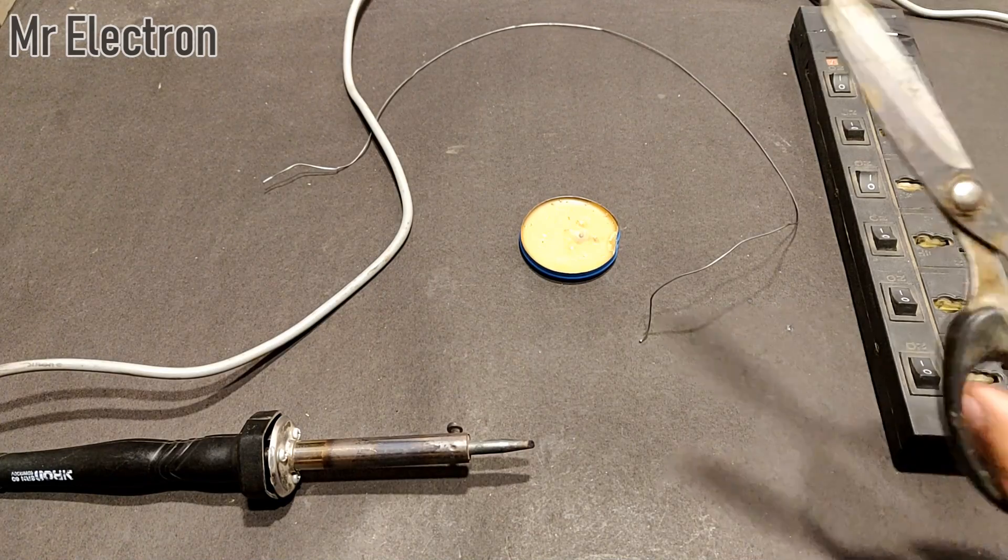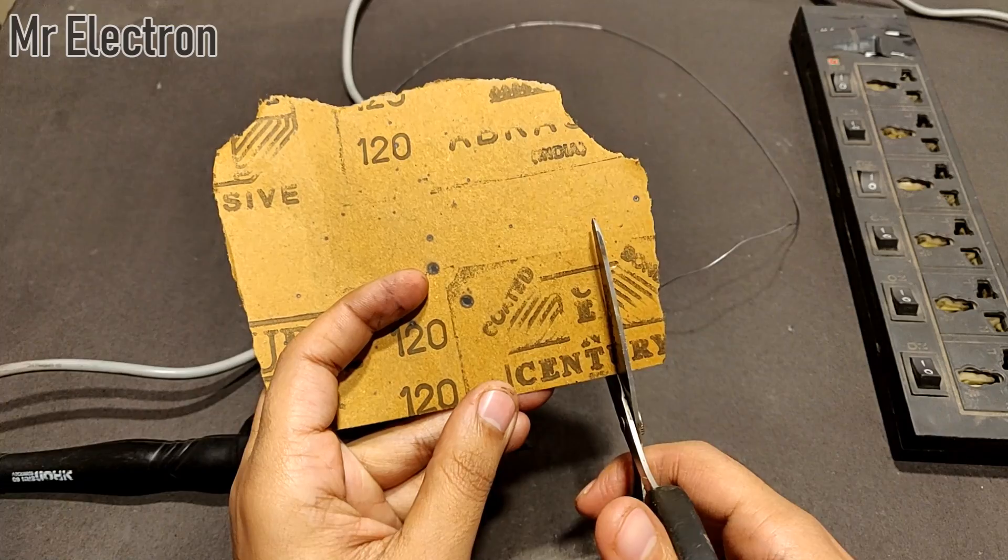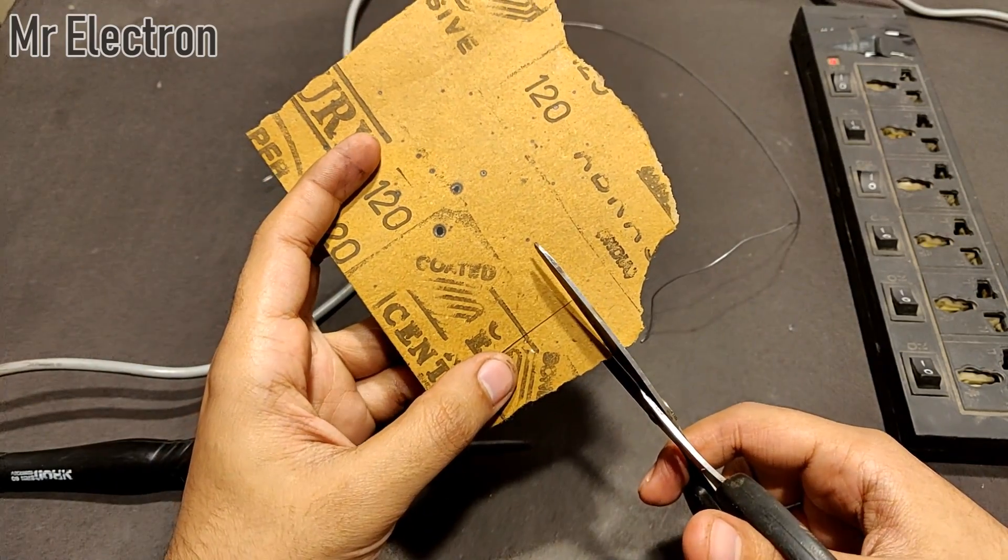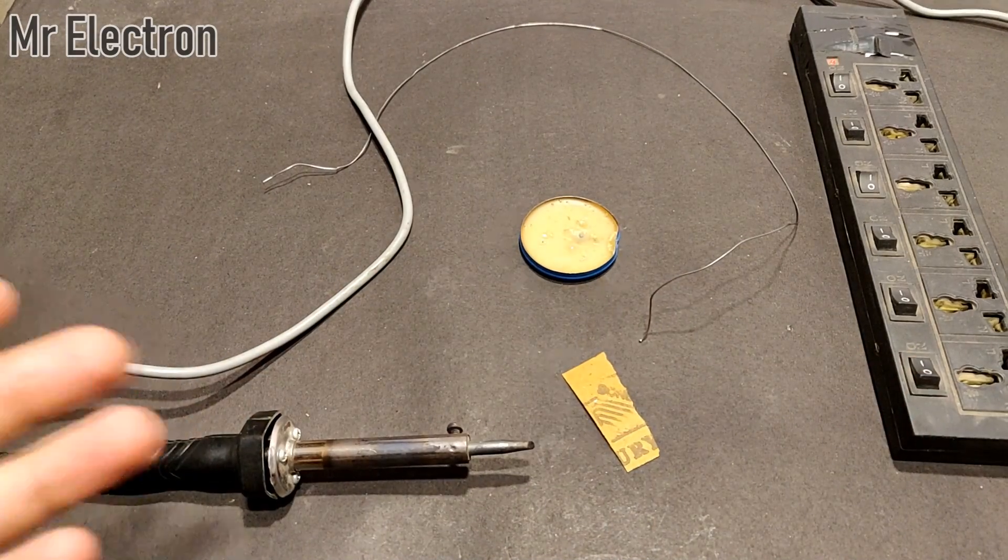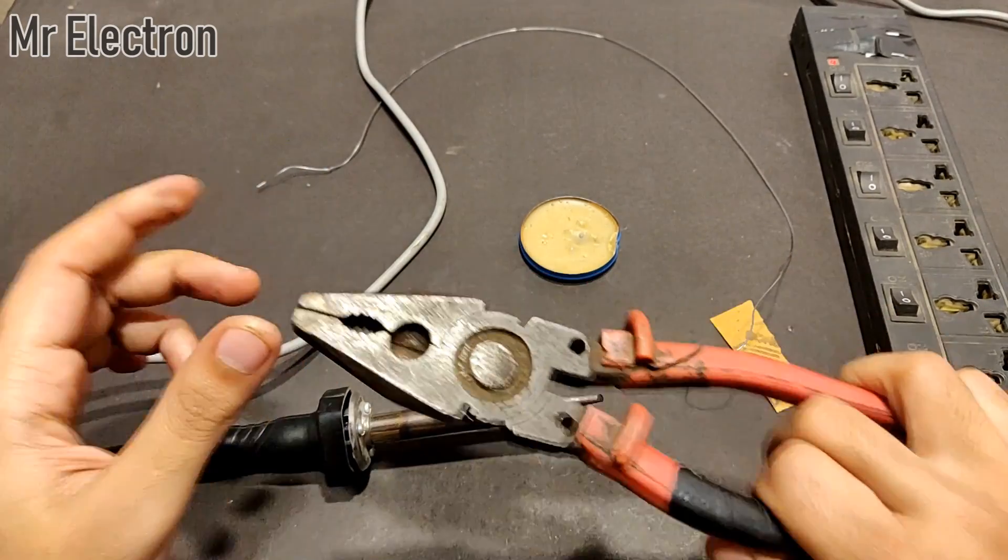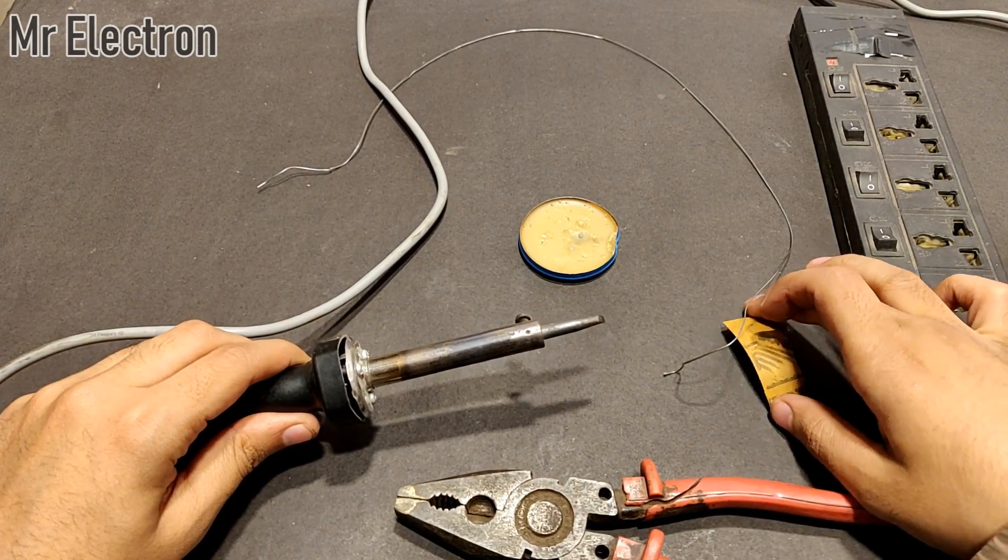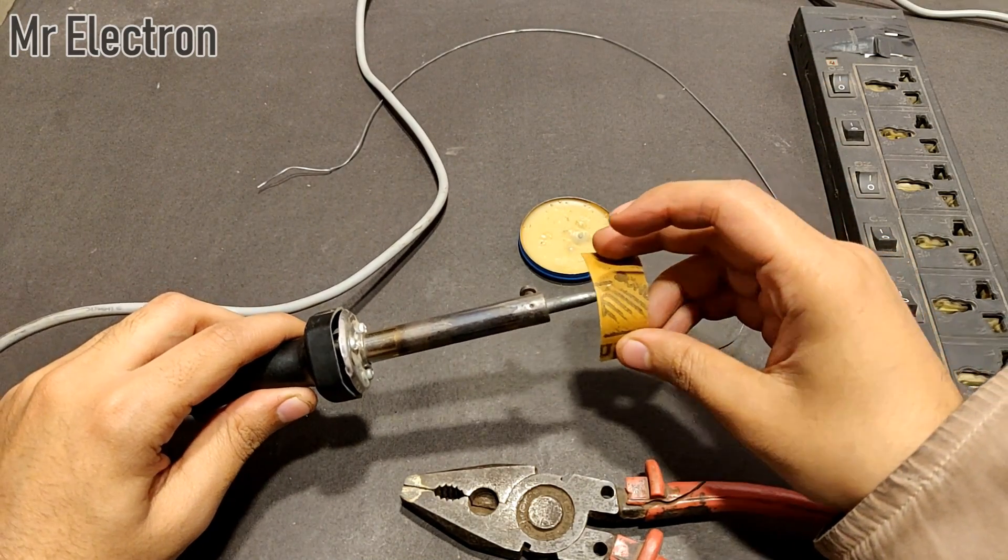Now guys, the first step is to take some sandpaper and cut a piece out of it. Then make sure that your soldering iron is not hot, then take a plier. After that, take your sandpaper and roll it on the tip.